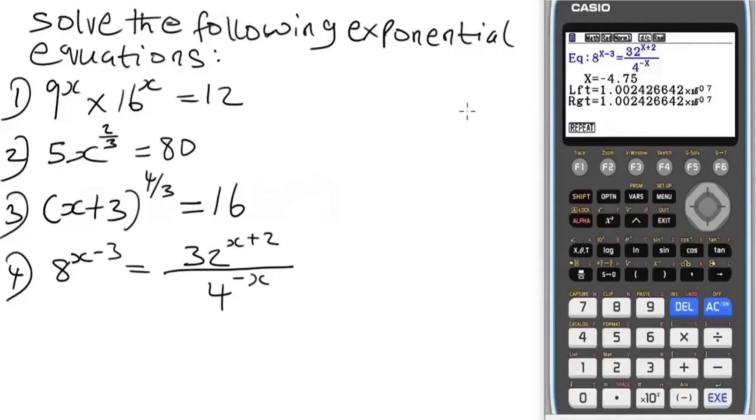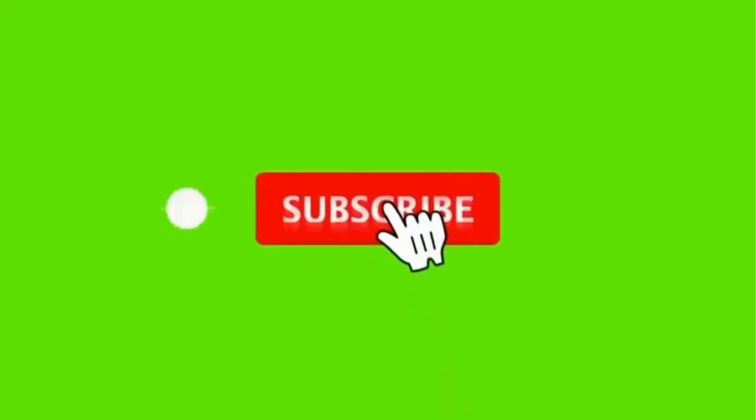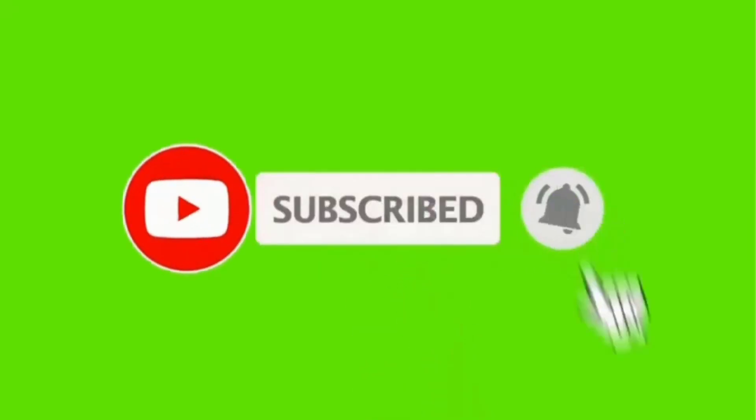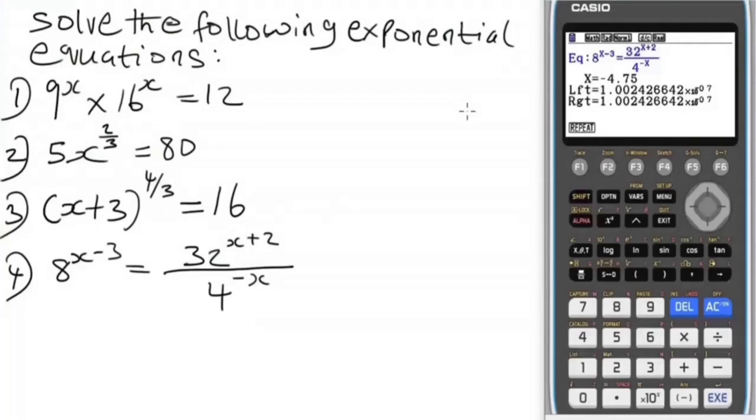Assign x to zero, press Solve again, and the answer is minus 4.75. That's the answer to this question. This is basically how you can solve problems involving exponential functions or exponential equations using the Casio FX-CG50 graphical calculator. Hope that was interesting. If you're new to the channel, please subscribe. Like the video. If you have any questions, leave a comment and I'm sure to give you a response.